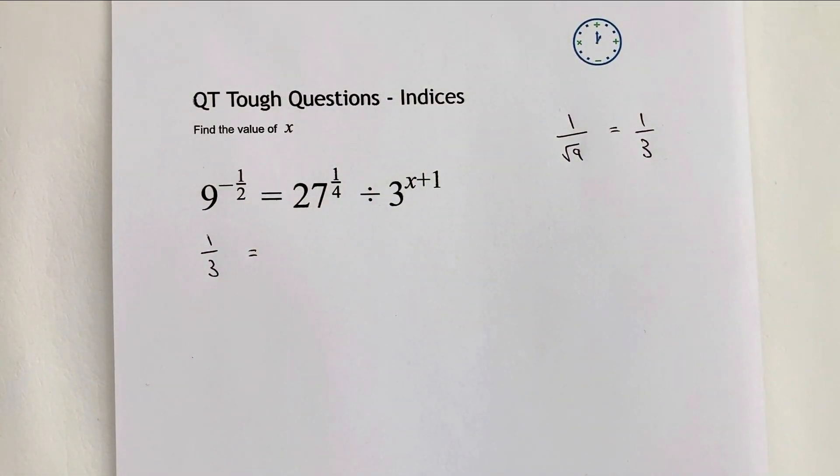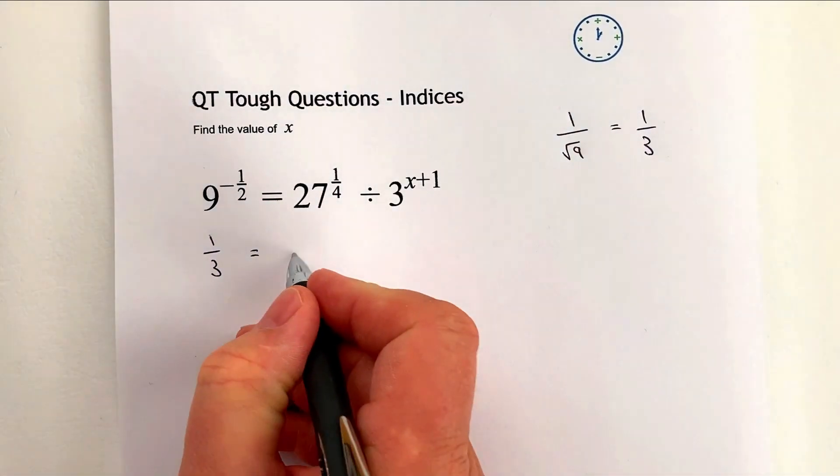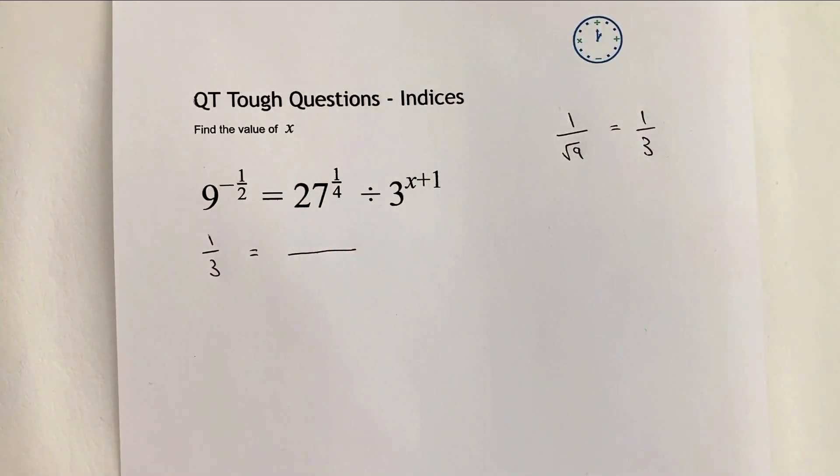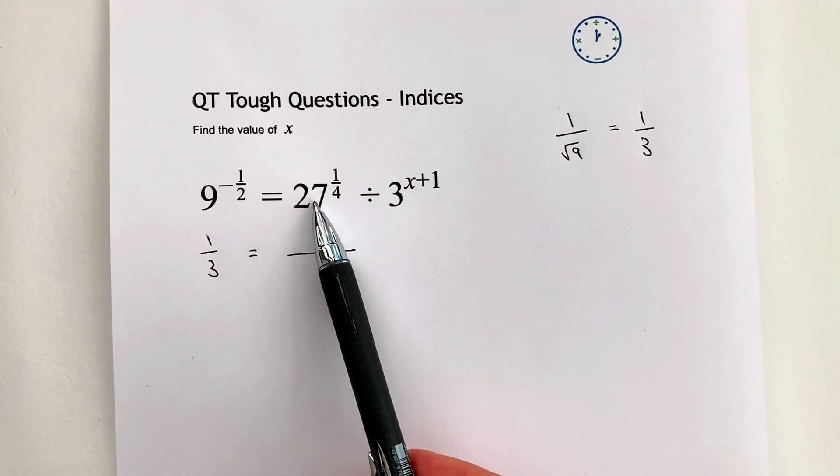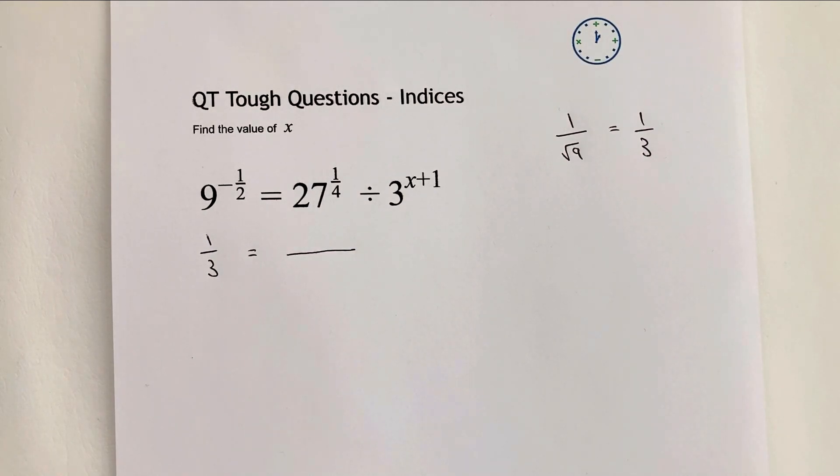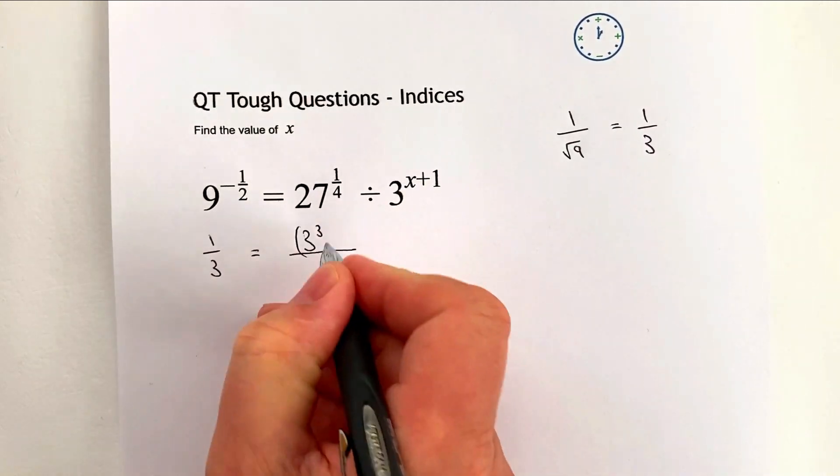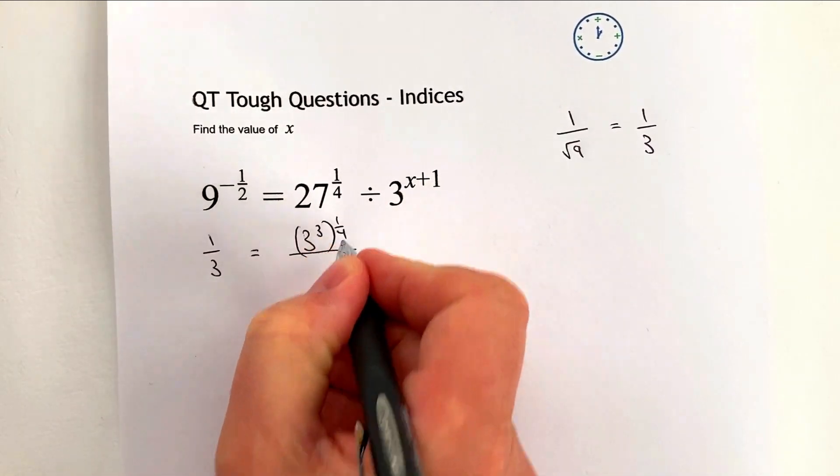The right hand side of the equation, I'm going to change slightly. Because it's a division, I'm going to write it as a fraction. And also, it makes sense for me to write everything in base 3. So 27 is 3 cubed. It's exactly the same as saying 3 times 3 times 3. So I can write 27 as 3 cubed. I'll put that in brackets, and then it's the power of a quarter.